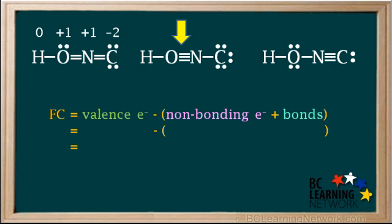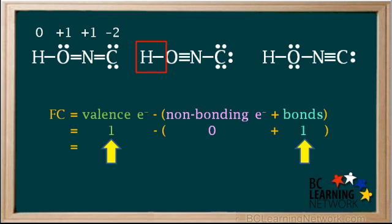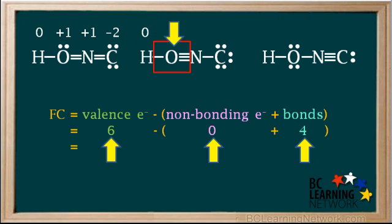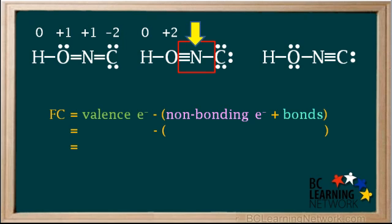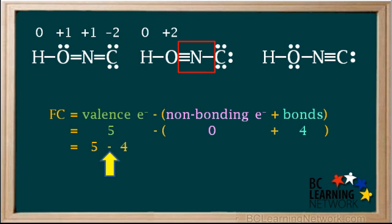Now we'll calculate the formal charges on the atoms in structure two. Hydrogen again has one valence electron and one bond, so its formal charge is one minus one, which equals zero. The next atom, oxygen, has six valence electrons, no non-bonding electrons, and four bonds. So its formal charge is six minus four, which is positive two. Now we'll find the formal charge on the nitrogen atom. It has five valence electrons, no non-bonding electrons, and four bonds. So its formal charge is five minus four, which equals positive one.